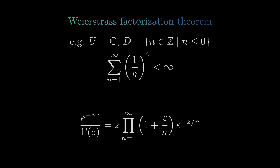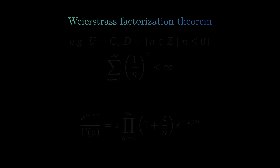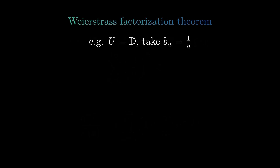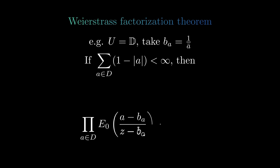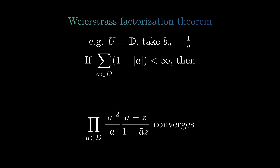Let's look at an example where the domain is not the entire complex plane but just the unit disk. For each point in the unit disk, we take the conjugate reciprocal as its associated point. Under this condition, no correction factors are needed in the product, and after some simplifications, we get a formula for a holomorphic function on the unit disk with prescribed zeros.